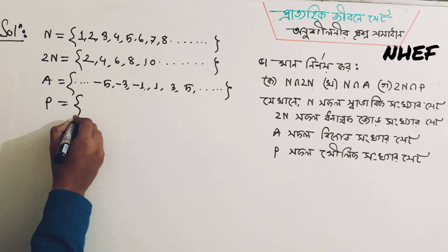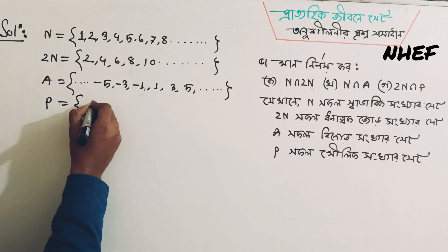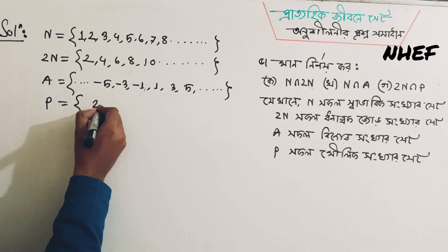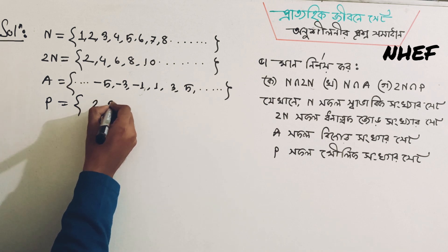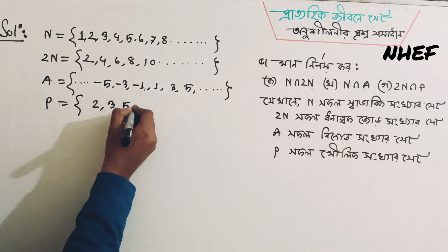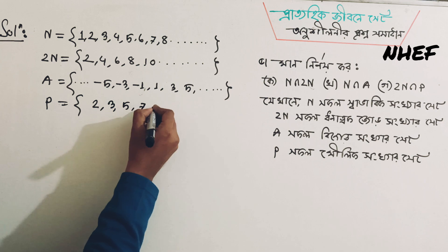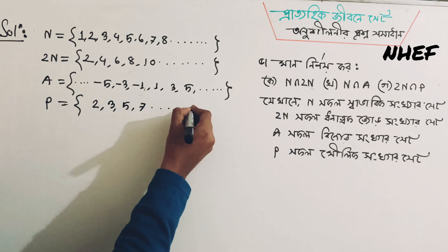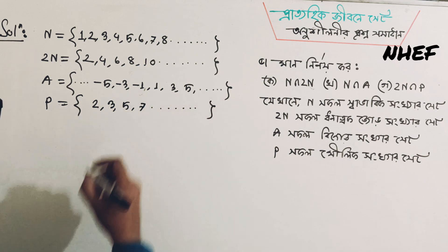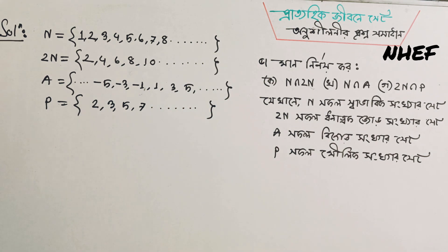P is equal to 2, 3, 5, 7... So this is the name of the only note — the prime number set.